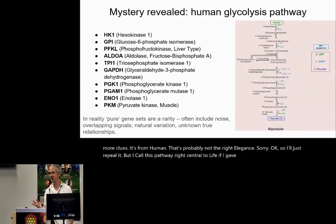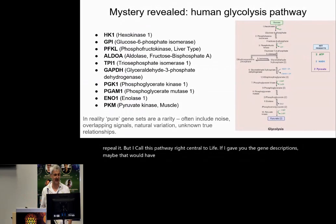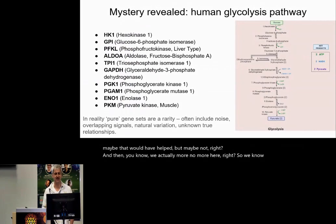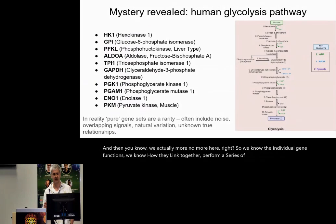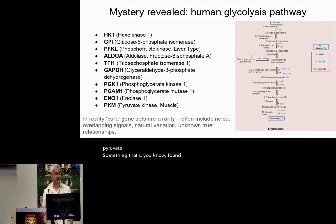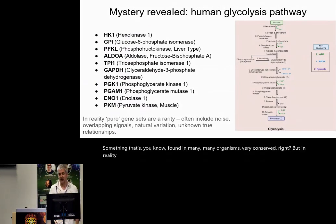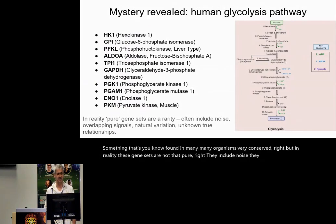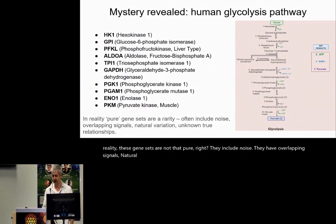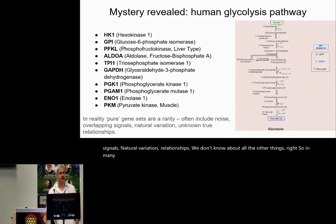If I gave you the gene descriptions, maybe that would have helped, but maybe not. We actually know more here — we know the individual gene functions, how they link together to perform a series of reactions that take glucose to pyruvate. Something found in many, many organisms. But in reality, these gene sets are not that pure. They include noise, overlapping signals, natural variation, relationships we don't know about. So in many ways, it's kind of downhill from this model organism, well-known process setting.